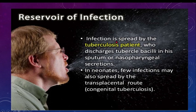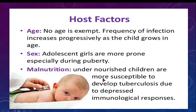When a person with active TB coughs, they may spit, spreading the infection. Infection can also occur through nasopharyngeal secretions. In neonates — from birth to 28 days — tuberculosis can sometimes occur via transplacental transmission, called congenital tuberculosis. If the mother is a case of tuberculosis, the neonate can suffer from tuberculosis, although this is very rare.